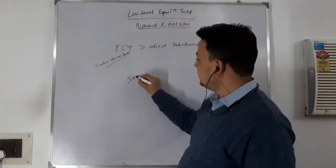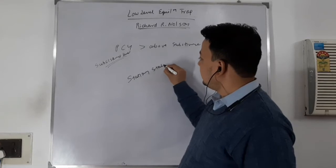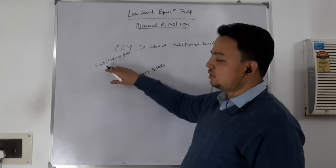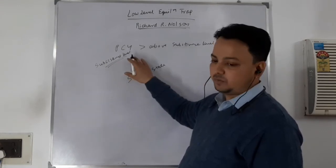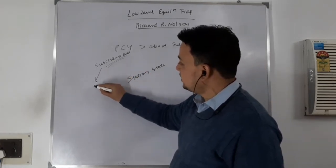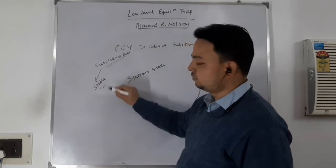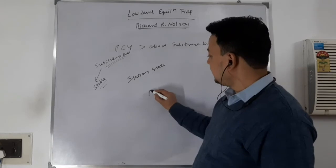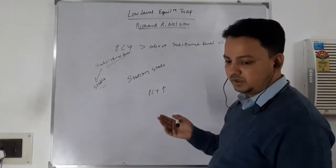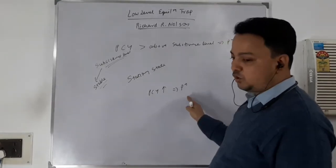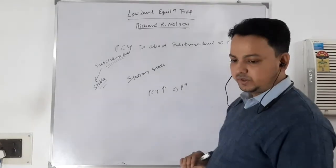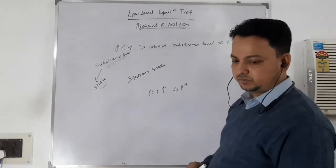This is the Low-Level Equilibrium Trap. Underdeveloped countries have this trap because there is a stationary state that the country has reached — they are stuck to a subsistence requirement, giving them a stable equilibrium. Whenever per capita income increases above subsistence level, population growth outpaces the increase in per capita income, and again you move back to subsistence level.